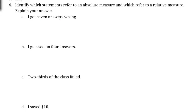So part A, I got seven answers wrong. And so this is an absolute measure because it's stating how many we had wrong. And so this is absolute. And it's because it's a count of the number wrong.